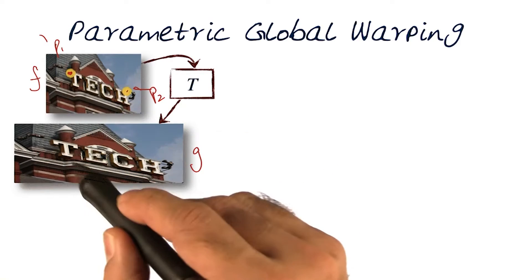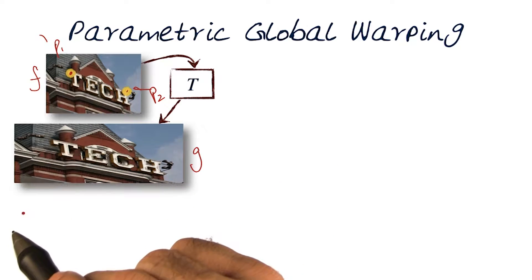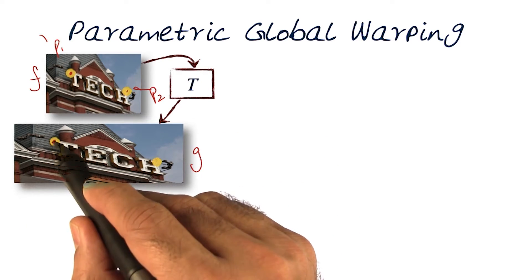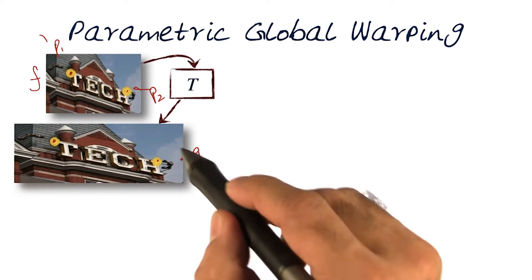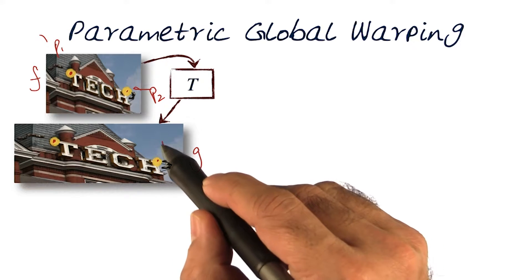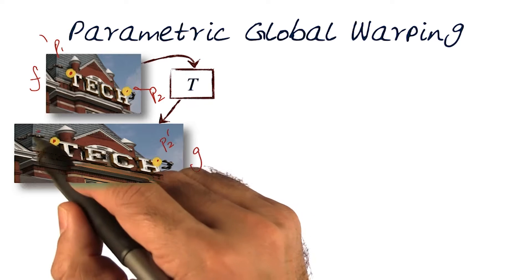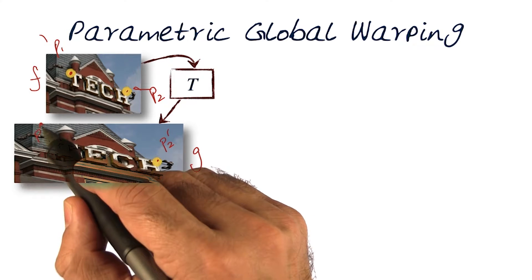This p1 and p2 have now moved to different points here. These are now those two points. For sake of clarity, we will call this p2 prime, and we will call this p1 prime.